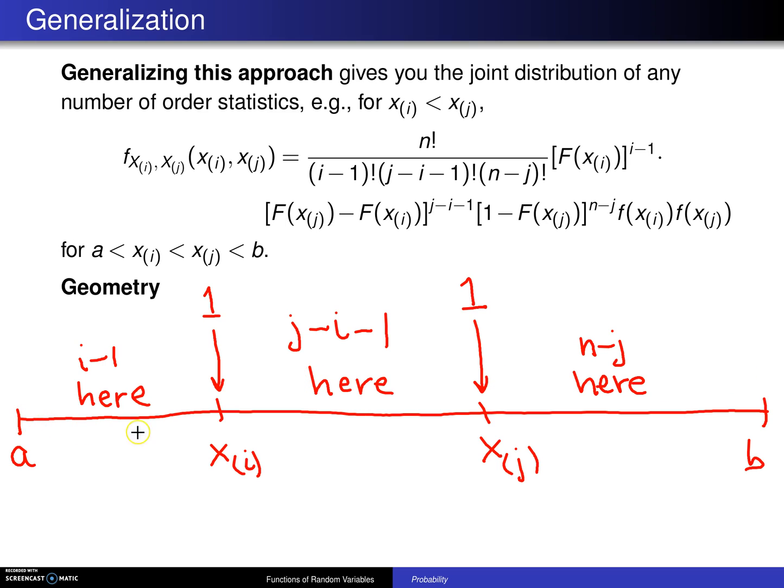Finally, what is the probability of falling in this region right here? Well, that probability of falling there is just f of x sub i. The probability of falling way out here is 1 minus capital F of x sub j. And what is the probability of falling in between these two values? Well, that is just the CDF evaluated at x sub j minus the CDF evaluated at x sub i.